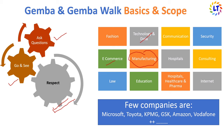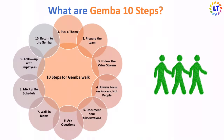A few companies that have adopted Gemba Walk are Microsoft, Toyota, KPMG, Amazon, and Vodafone. Now, the Gemba Walk steps: first, pick a theme — Gemba Walk should have a defined purpose and you should have some knowledge of the situation. Second, prepare the team — team members should know that the goal is to remove obstacles; talk with them about the Gemba Walk before it happens.